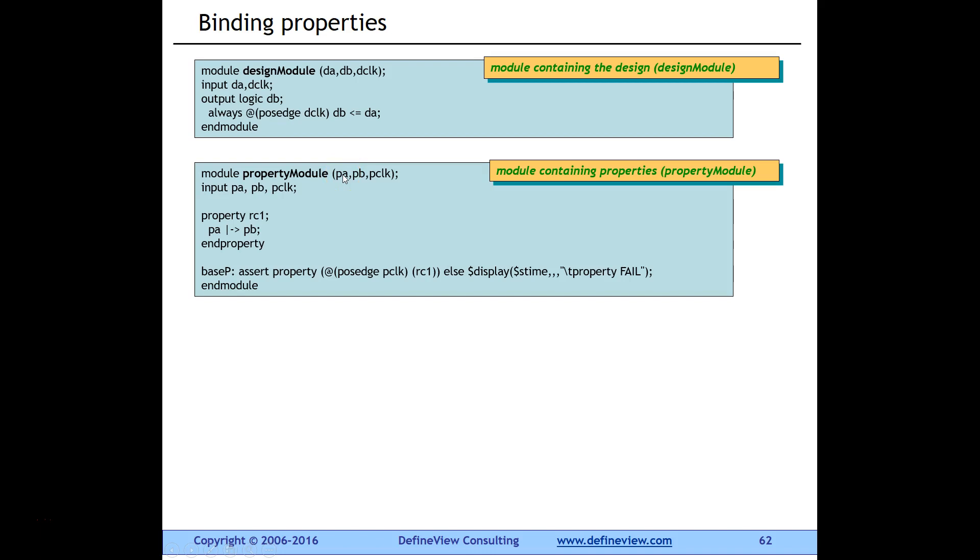It wants to work on the inputs that come from the design module. So it has PA, PB, P clock as inputs and it has a very simple property called RC1 which says if PA is true it implies PB. As you can see, the output of the design module DB goes as an input PB, but we haven't made the connection yet. We haven't done a bind yet.